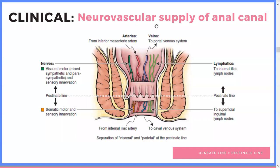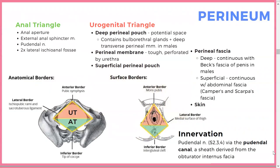Another important thing to know is the neurovascular supply of the anal canal — not strictly reproductive but important. There is somatic innervation below the pectinate line and visceral above it. Structures superior to the pectinate line drain to different lymph nodes than those below, which is important for understanding cancer metastasis.